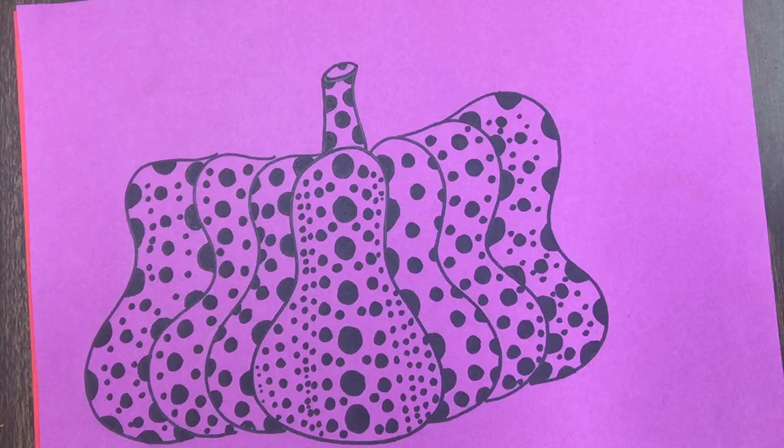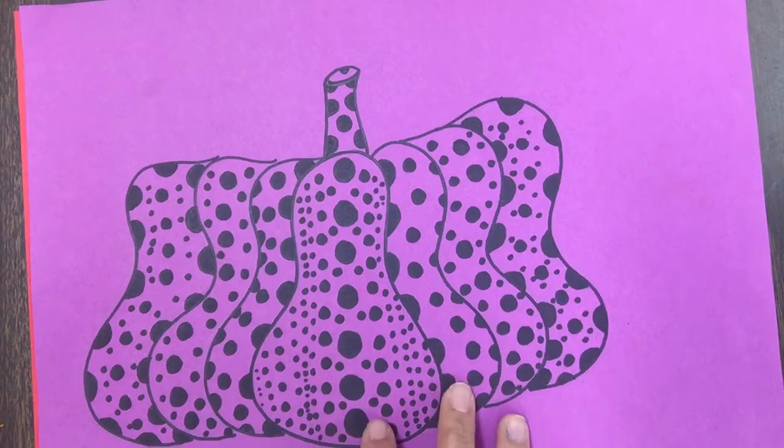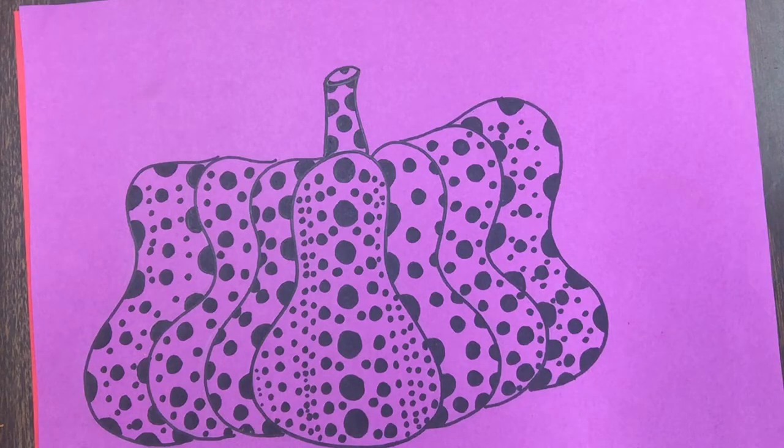You looked at some of her artwork, and you learned that she loved polka dots. We are going to be using her polka dotted pumpkins as inspiration for our art lesson. This week, we're going to start on part one of the lesson and continue part two next week. So since you're going to be starting part two next week, you're going to hold on to this artwork. What you're going to do is maybe find a folder and keep your artwork in that folder for safekeeping until next week when we start part two of the lesson.